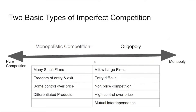Looking at the continuum, pure competition is on one extreme and monopoly is on the other. In the middle, we have monopolistic competition and the oligopoly.